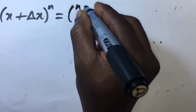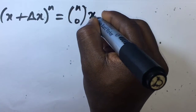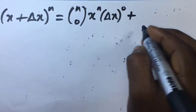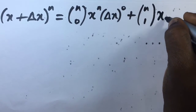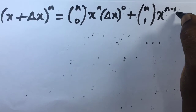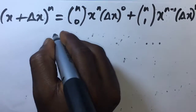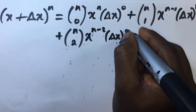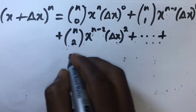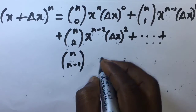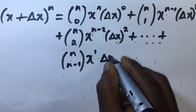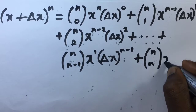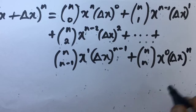Using the binomial expansion theorem to expand (x + Δx)^n: the first term is nC0 · x^n · (Δx)^0, plus nC1 · x^(n−1) · Δx, plus nC2 · x^(n−2) · (Δx)^2, plus … plus nC(n−1) · x^1 · (Δx)^(n−1), plus nCn · x^0 · (Δx)^n.